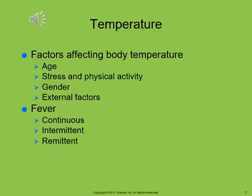Fever can be continuous, intermittent, or remittent. Continuous fevers stay above the normal range but fluctuate 3 degrees or less. Intermittent fevers come and go, alternating between elevated and normal temperatures. Remittent fevers fluctuate considerably and never return to the normal range.